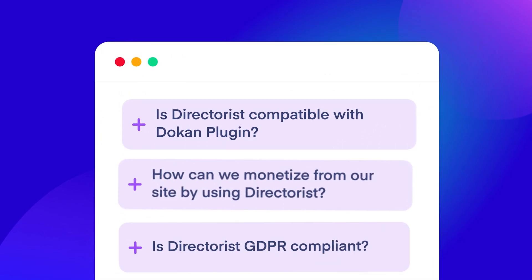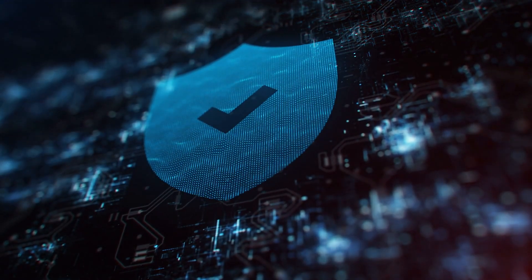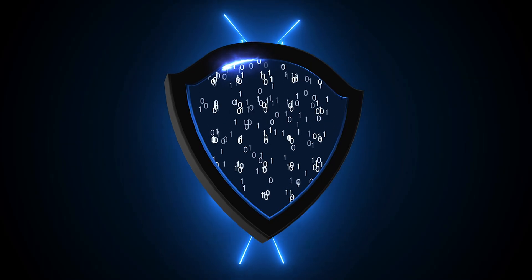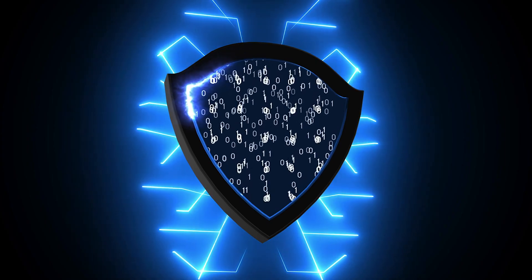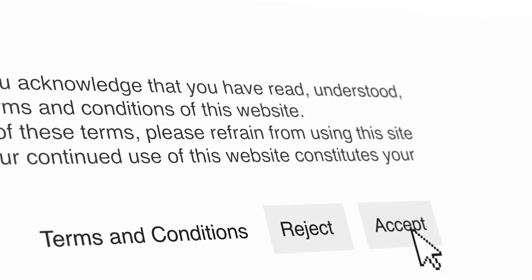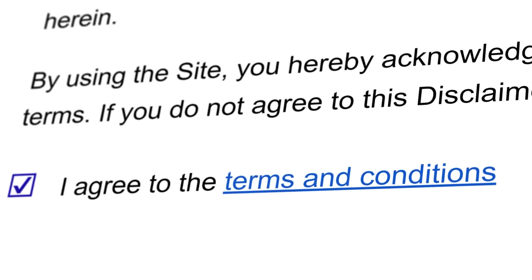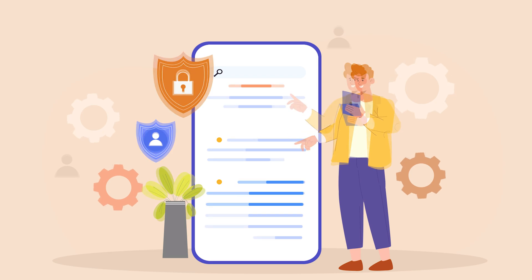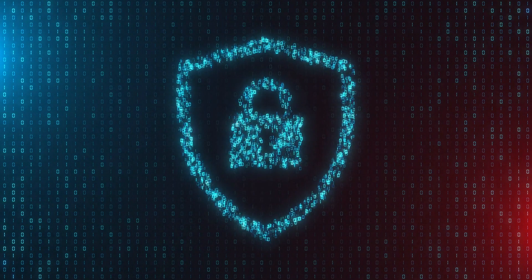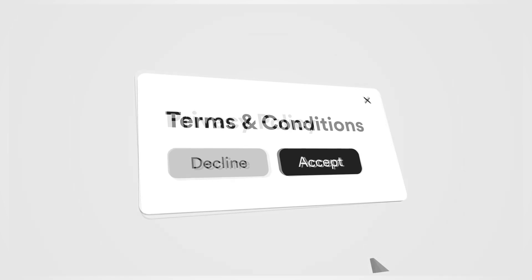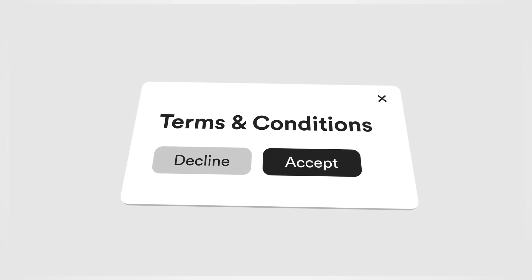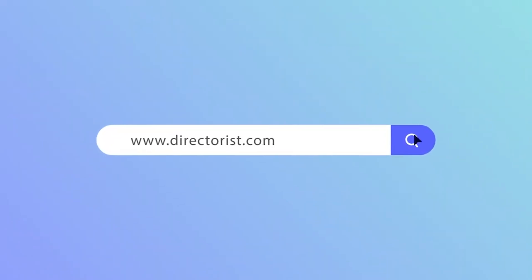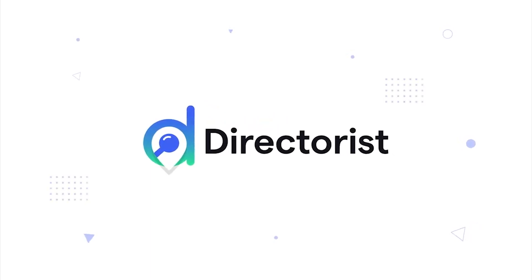Is Directorist GDPR compliant, and what measures are in place to ensure user data privacy and security? Yes, Directorist is entirely GDPR compliant. From adding listings to registering users to contacting listing owners, all functionalities adhere to GDPR guidelines. Directorist ensures user data privacy and security by obtaining user consent, handling data securely, providing privacy controls, implementing data protection measures, and respecting user rights under GDPR. Users can confidently interact with the platform while controlling their personal information. Would you like to learn more? You can visit directorist.com by clicking the link in the description below. Thanks for watching, and don't forget to like and subscribe for more WordPress tips.